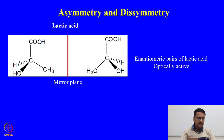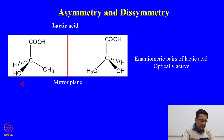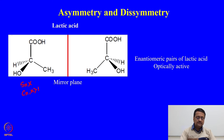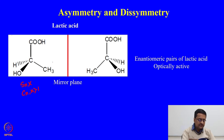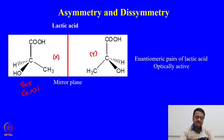If we look at lactic acid, the molecule does not have any alternating axis of symmetry — no Sn and no Cn with n greater than 1. So this molecule is an asymmetric compound and the corresponding mirror image is non-superimposable with the original compound. These two representations are non-superimposable mirror images — enantiomeric pairs of lactic acid — and hence they are optically active.